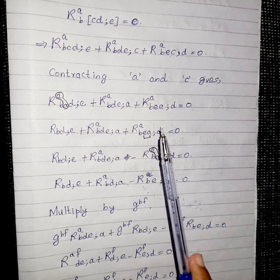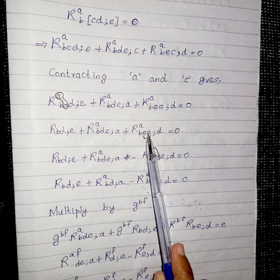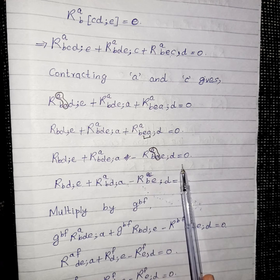You know that if I replace ea by ae then I will get a negative sign over here and then we will get this equation.